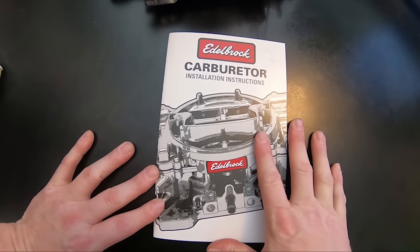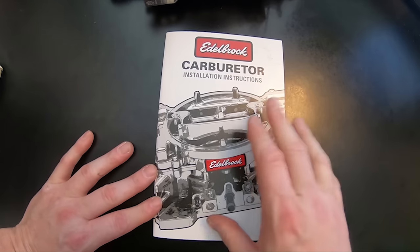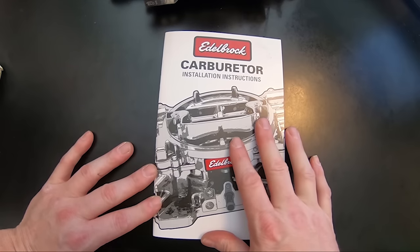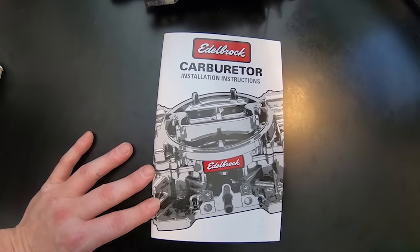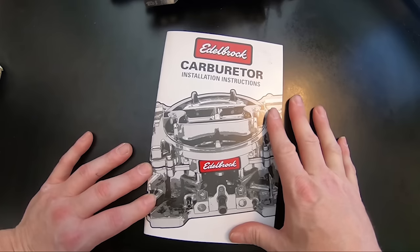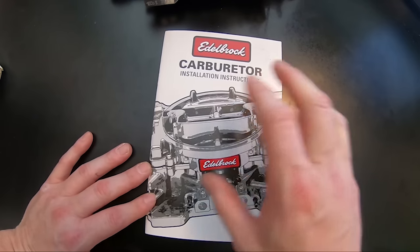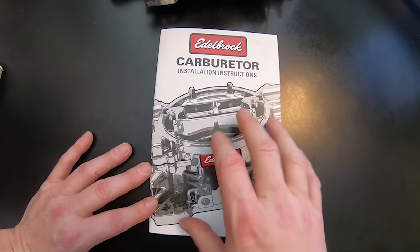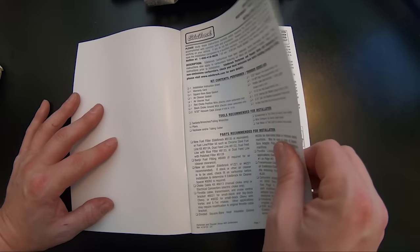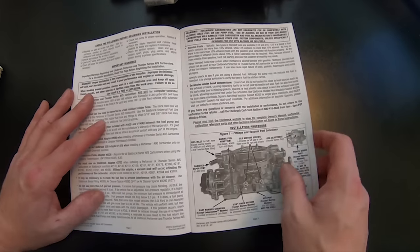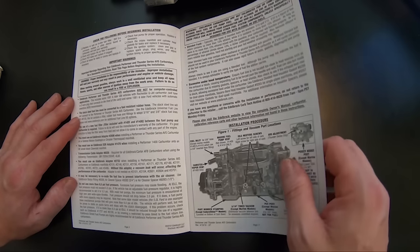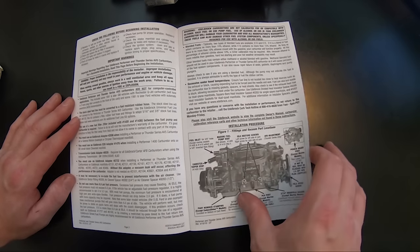All right, so let's talk about the book that comes in with your Edelbrock carburetor. It's one of the most unused pieces that come in with the carburetor. Obviously, the carburetor is the main thing that you're working with but this book will tell you quite a bit of what you need to know. So don't throw this thing out or set it aside. Take a minute or two and go ahead and read through it.